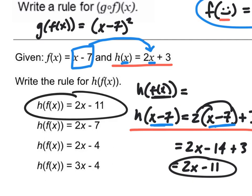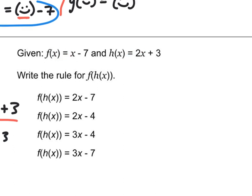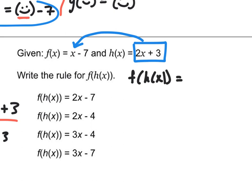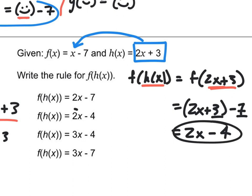Given the same functions f and h, find f(h(x)). I'm taking h(x) = 2x + 3 and plugging it into f. So f(h(x)) = f(2x + 3) = (2x + 3) − 7 = 2x − 4. And that's our answer.